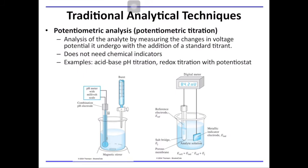We have talked about volumetric analysis, which involves determining the volume of the titrant that reacts with your analyte in the presence of an indicator, and gravimetric analysis, which takes into account the weight of the analyte before and/or after some transformation. Now we are talking about potentiometric analysis. Generally, the setup used in potentiometric analysis is similar to that of volumetric titration — we use a burette. However, the main difference is the use of a potentiostat. A potentiostat measures the changes of voltage potential of the solution upon addition of the titrant to your analyte. The change in voltage potential is measured and related to the concentration of analyte in your sample.